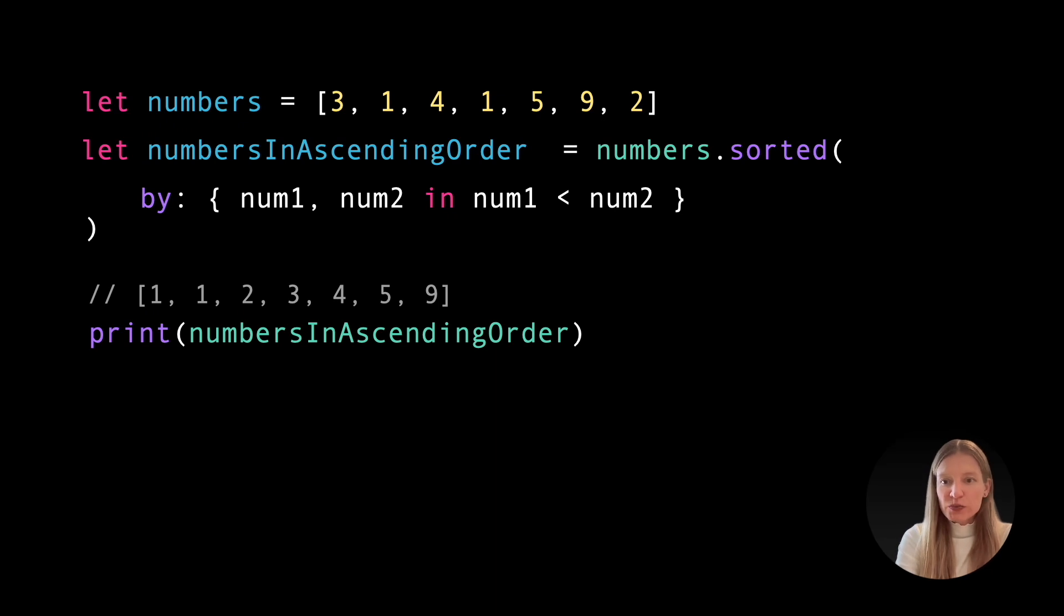To sort an array in Swift, we can use the sorted(by:) method. It returns a new array where elements are arranged based on the ordering defined by the closure we provide. The closure must take two elements as parameters and return a boolean value indicating whether the first element should be ordered before the second. The code we have works, but it's verbose and difficult to read at a glance. We can achieve the same result in a much more concise way. Let's see how.